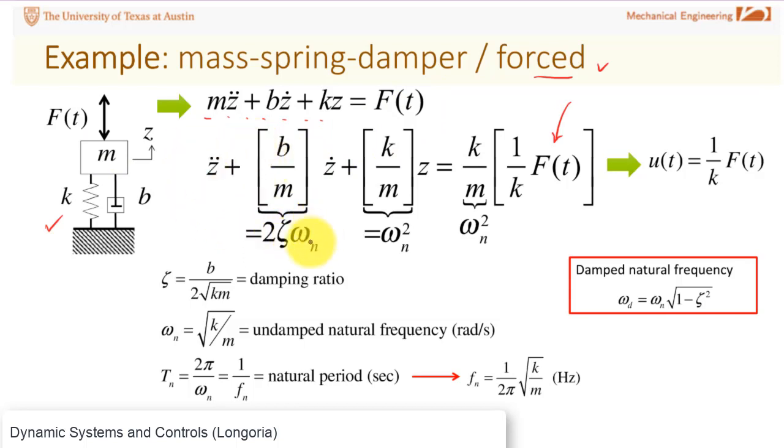You divide by m and you define your 2ζωn, classical form. Note that when you divide by m, you'd multiply and divide by k. Why do you do that? So that you can actually get ωn² on this side and put it into the standard form.